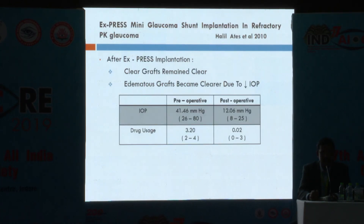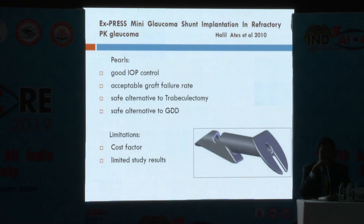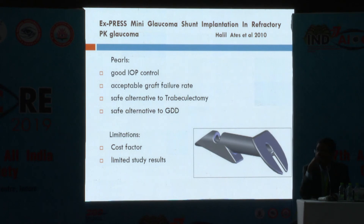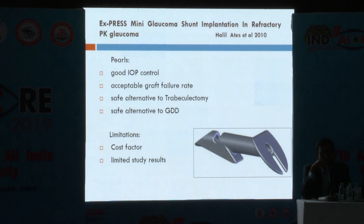The Express mini shunt was studied by Halil et al. in 2010 in 15 patients. It was concluded that grafts remained clear after surgery, and edematous grafts became clear due to a decrease in IOP. IOP control was reasonably good with acceptable graft failure rates. It is a safe alternative to trabeculectomy as the Express implant is placed below the scleral flap, with no need for iridectomy and less risk of inflammation. It is also a safer alternative to glaucoma drainage devices as tube-related endothelial complications are reduced. Limitations include cost and limited study results.